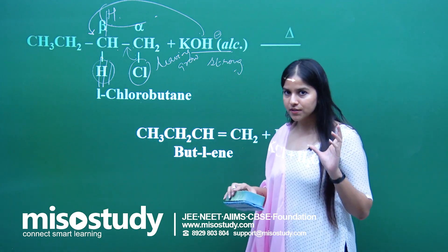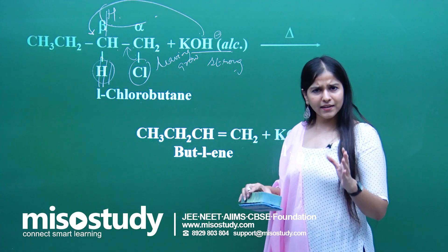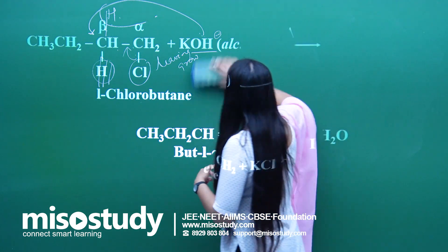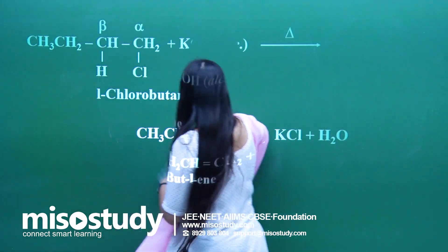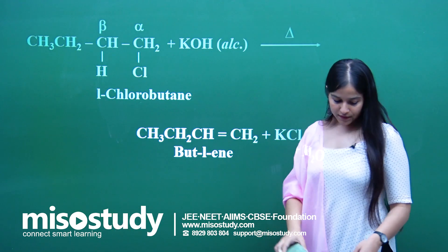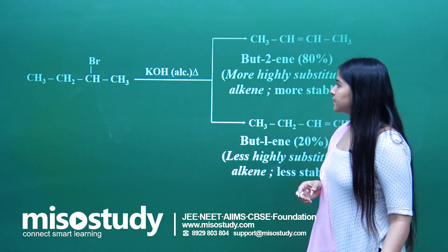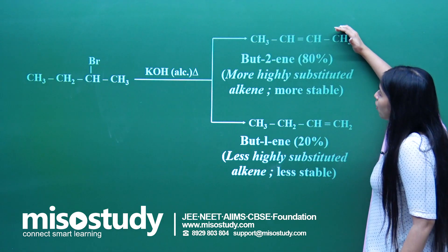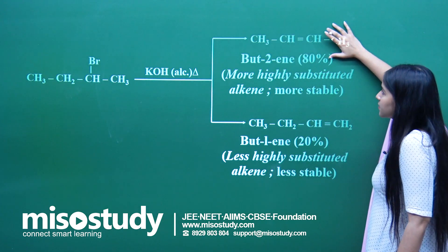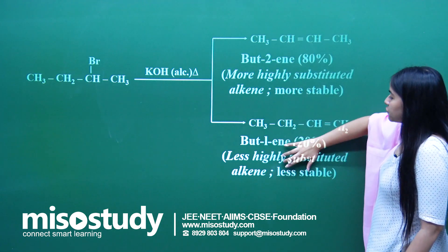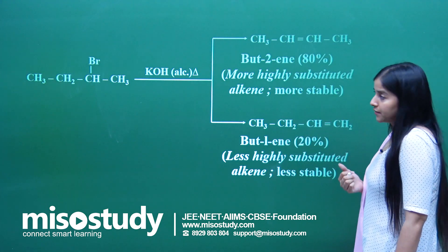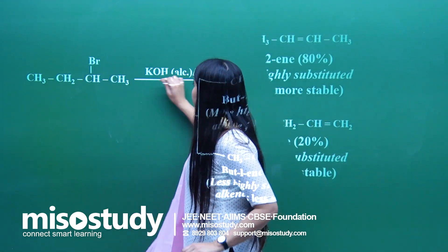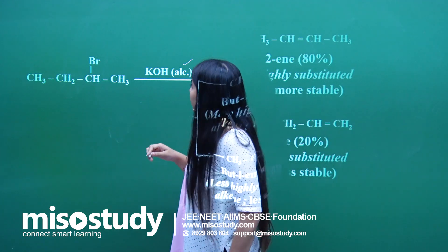Now, the application of the Zaitsev rule. What does it say? It is straightforward — similar to Markovnikov's and anti-Markovnikov's rules. The Zaitsev rule, given by a scientist, states that there is a greater possibility of formation of a highly substituted product compared to a less substituted product. The driving factor is the stability of the compound formed.